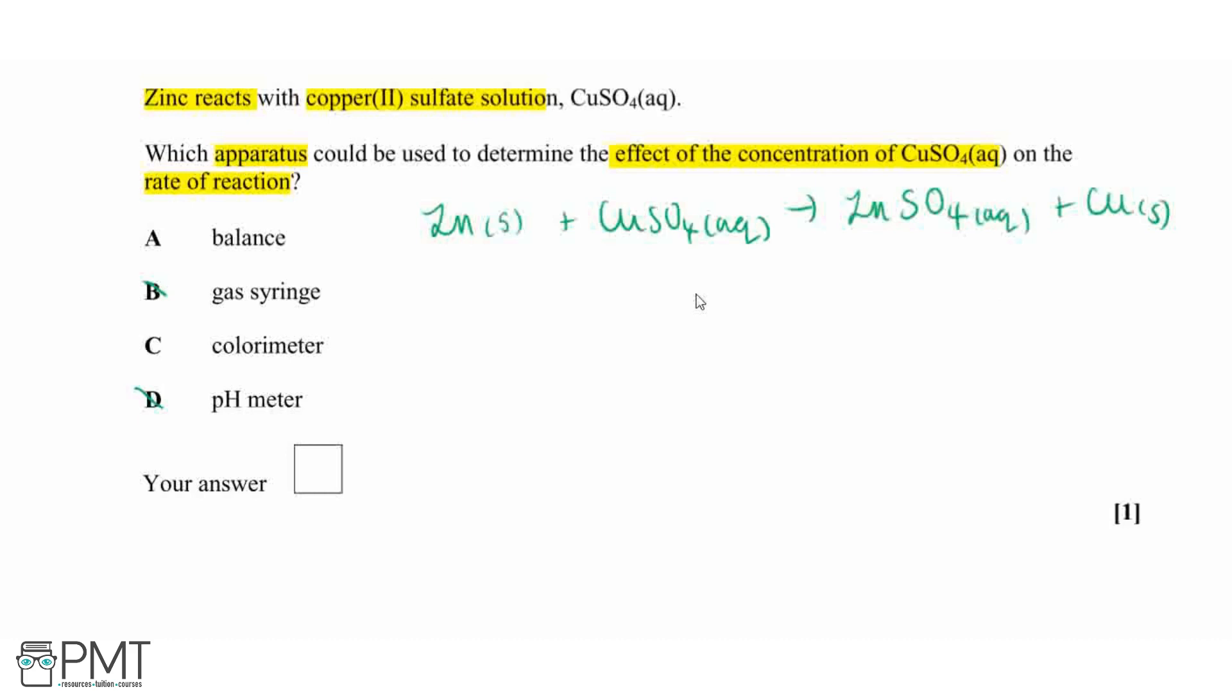And because we're not producing any gases, which can then be released, we're also not going to see any change in mass in this reaction because nothing is going to be able to escape our system. Therefore, we can't use a balance.